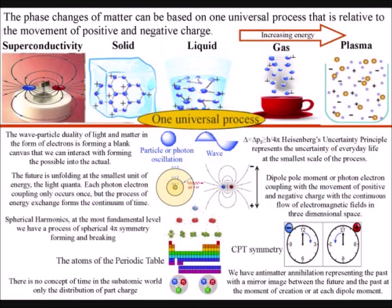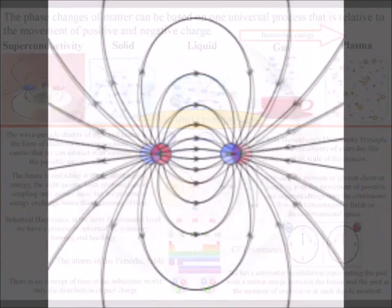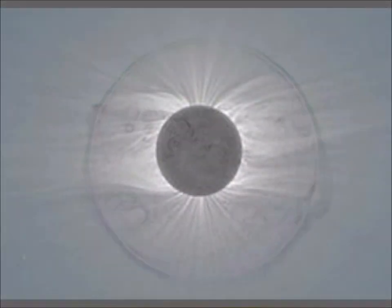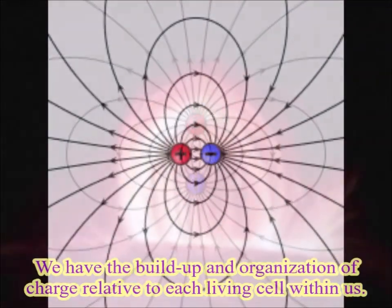Also, if the temperature increases, we have a phase change in matter forming plasma with charge being able to cover a whole star or even a large region of interstellar space.